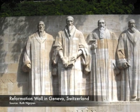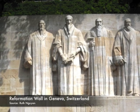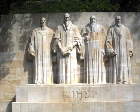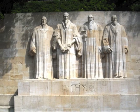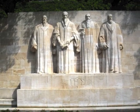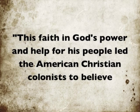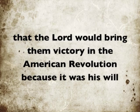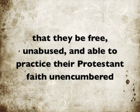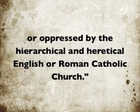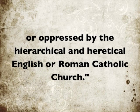A central feature of Calvinism is the belief in Providence—the idea that God has a plan and history is governed by it. God's most important work, according to Calvin, is his church, and so Christian believers enjoy special protection by God throughout their lives. The importance of this belief is explained by Sheldon: 'This faith in God's power and help for his people led the American Christian colonists to believe that the Lord would bring them victory in the American Revolution, because it was his will that they be free, unabused, and able to practice their Protestant faith, unencumbered or oppressed by the hierarchical and heretical English or Roman Catholic Church.'